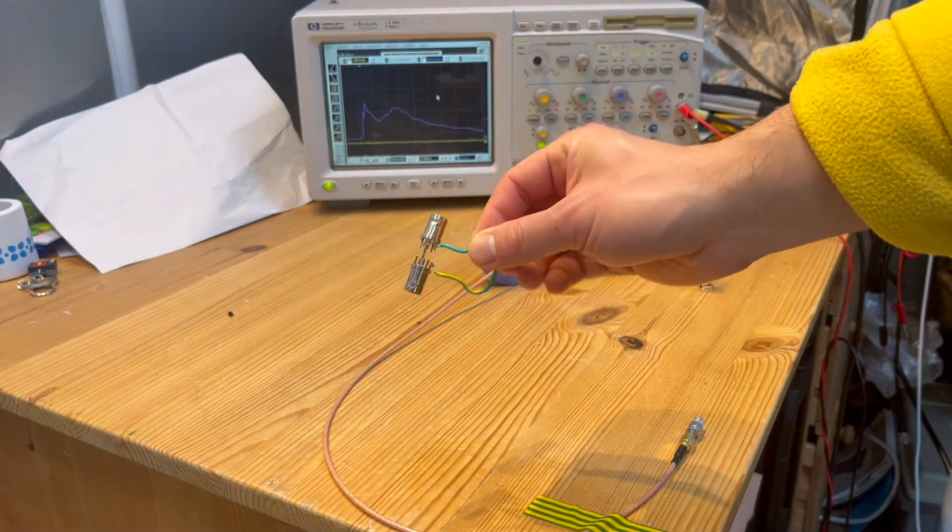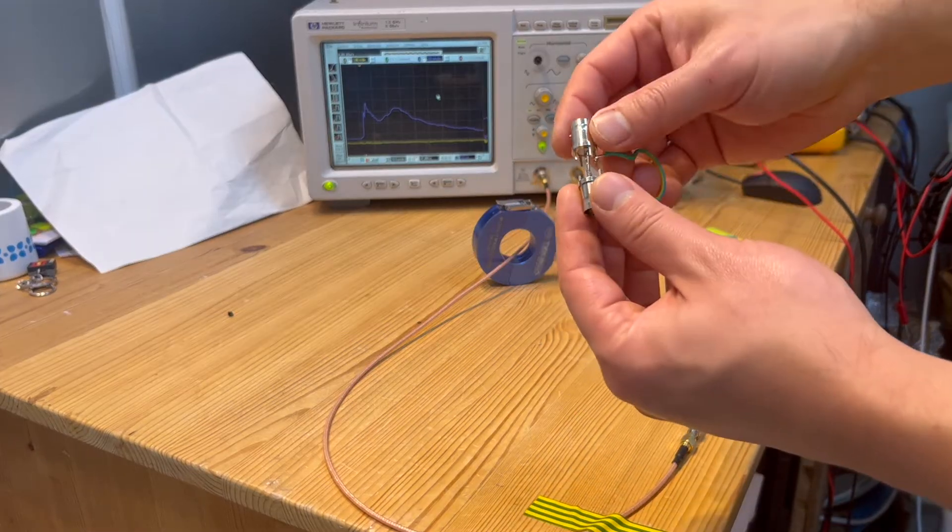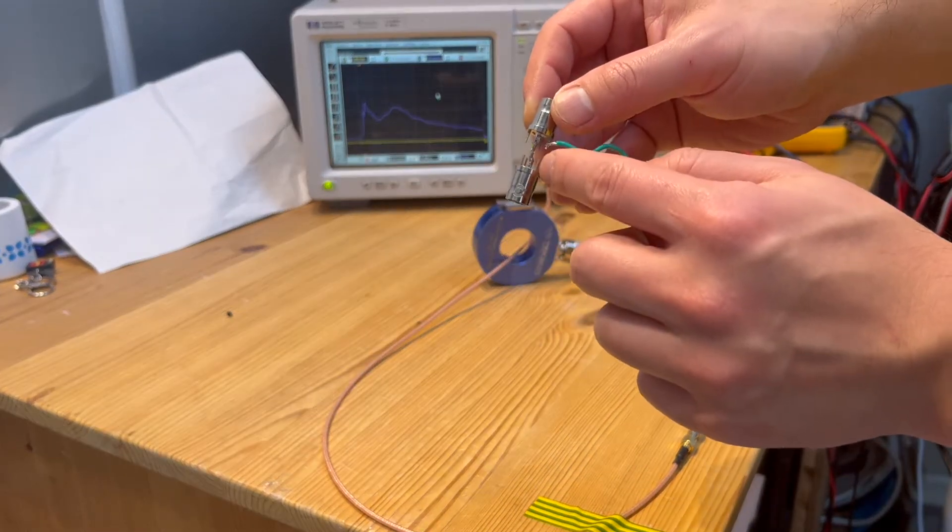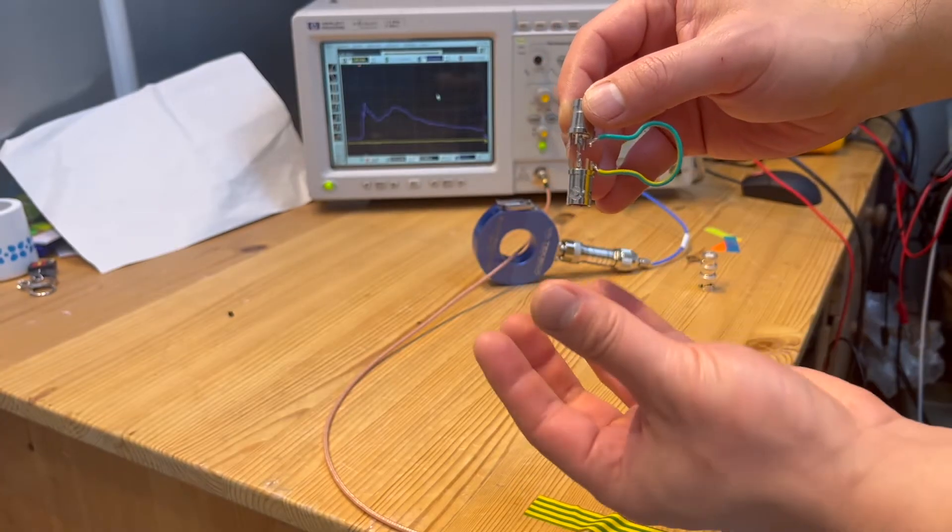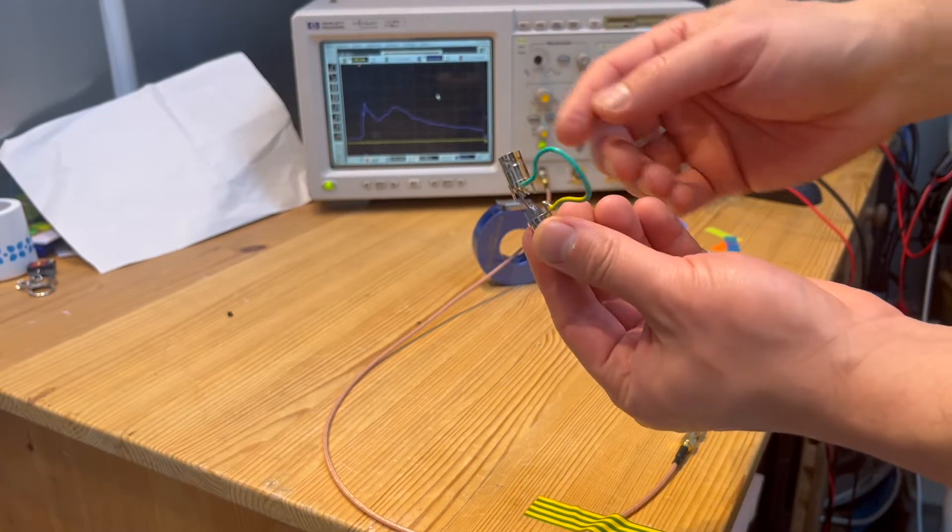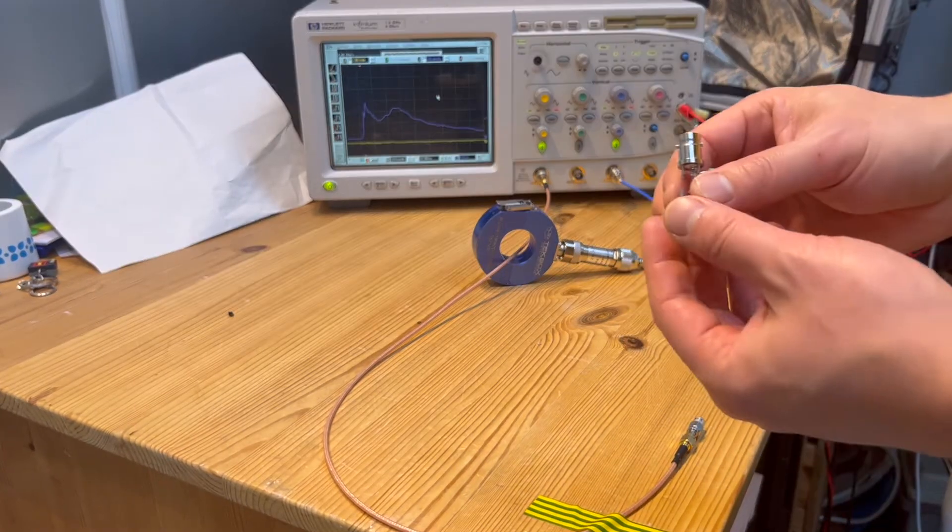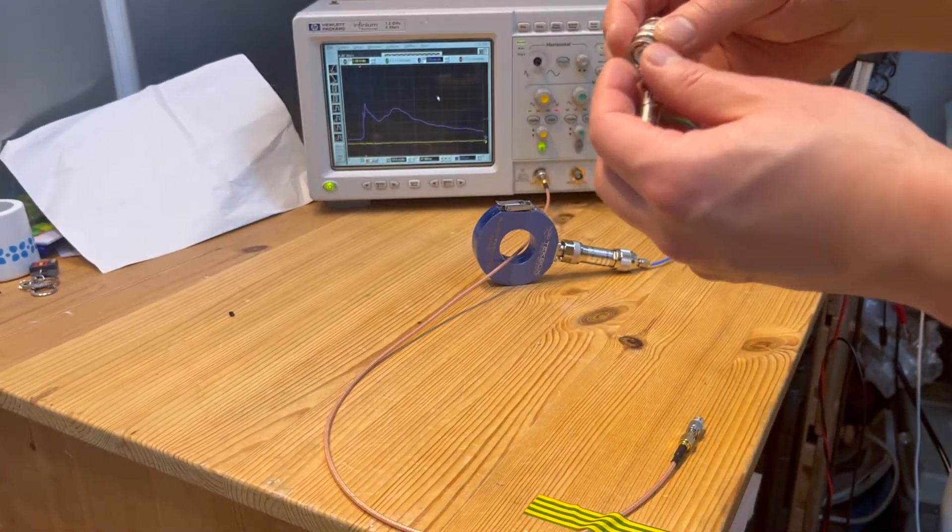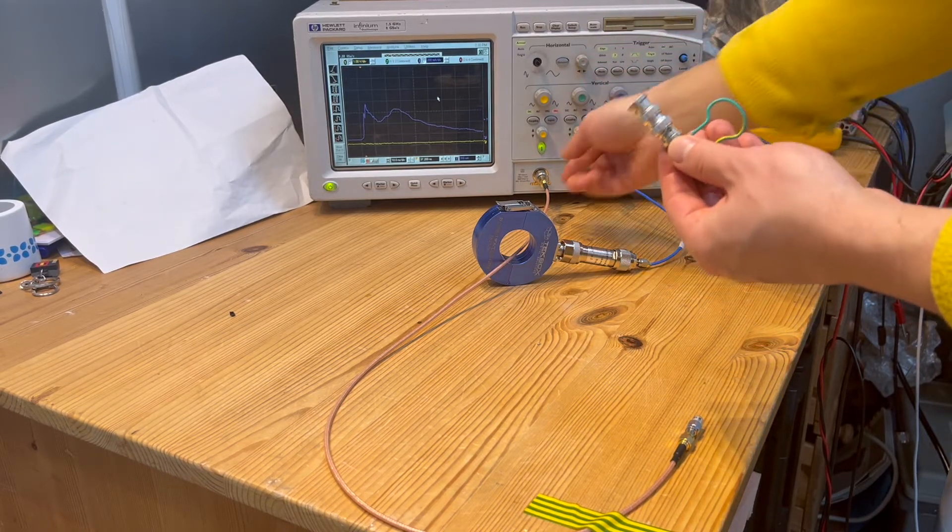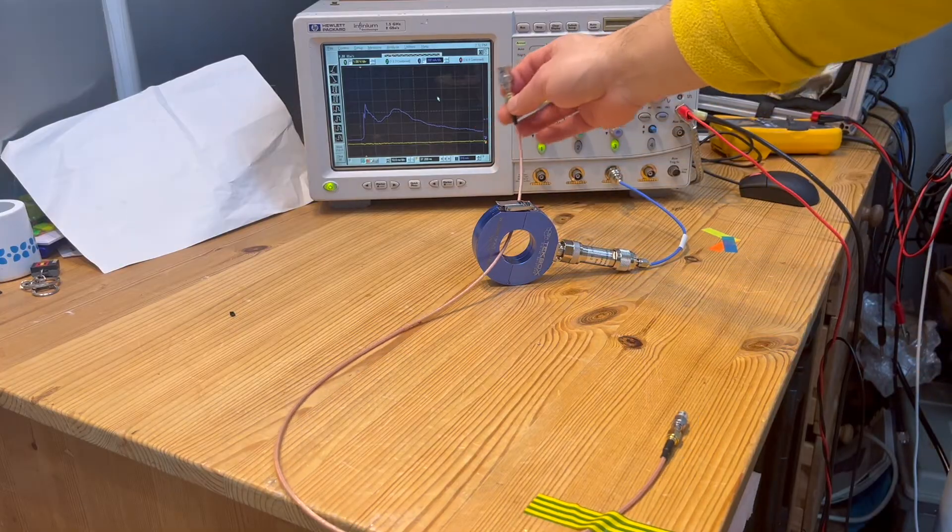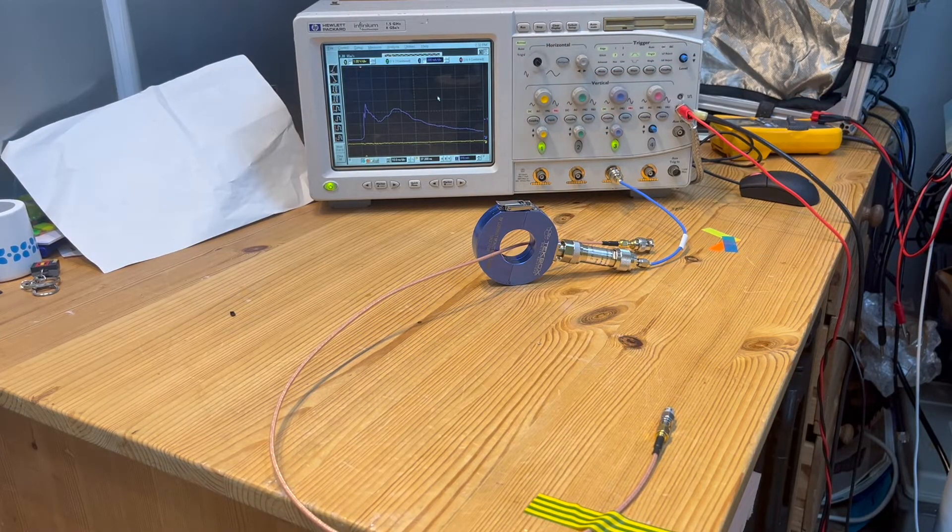So now what we're going to do is to show you that, look at this one here, this is a pigtail representation. So you still have the center conductor connected, however, rather than having a continuous shield, what we have is a pigtail. So now what we're going to do is, as you can see here, we're going to put this through the shielded cable here and then analyze the performance. So let's have a look.